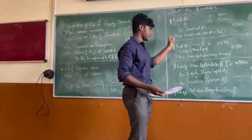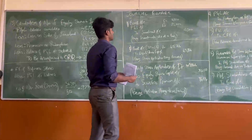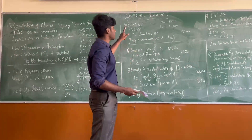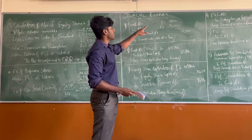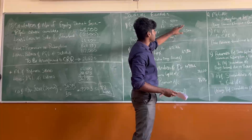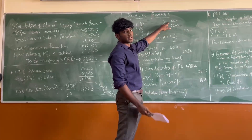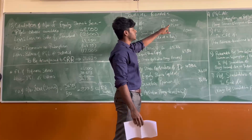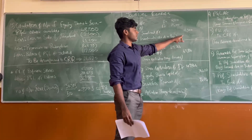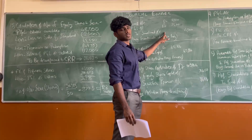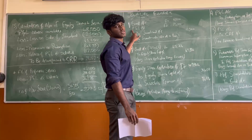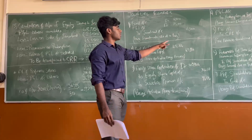Let's move on to the journal entries. The first journal entry relates to when we sold the investments. Bank account is debited 16,000, Profit and Loss account is debited 2,500 (the loss), and the Investments account is credited 18,500. This records the sale of investments at a loss.